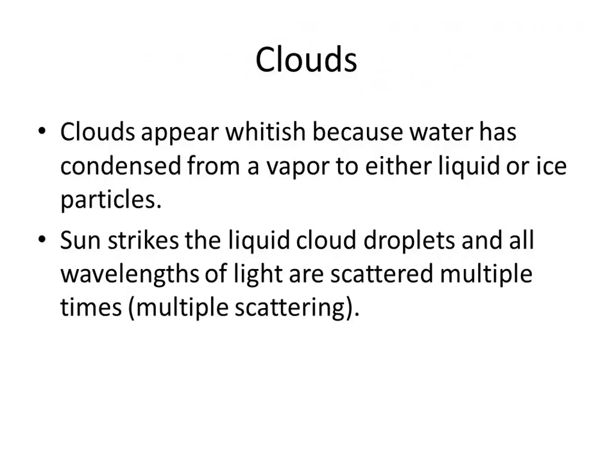This is one of the things I've already been talking about. When you see a milky white cloud, that's what this slide is talking about. Think about why it's milky white — the sun's light is interacting with liquid particles in the cloud, liquid or ice. It's a type of non-selective scattering, meaning all wavelengths are scattered, not just blue light like Rayleigh scattering. All colors of the rainbow are scattered, so it's called multiple scattering. It makes the cloud white.